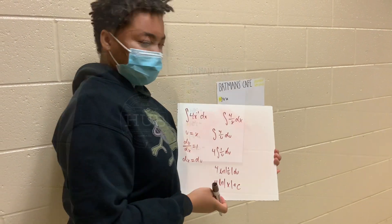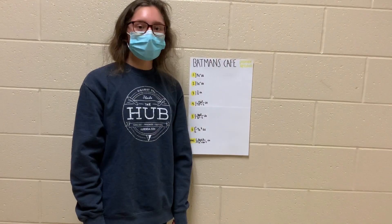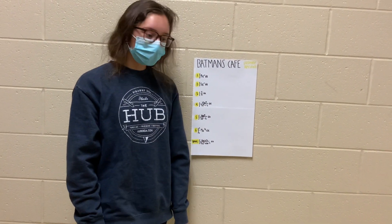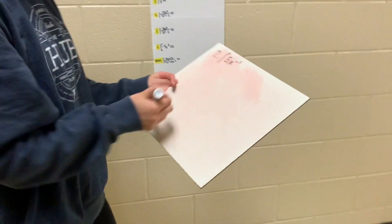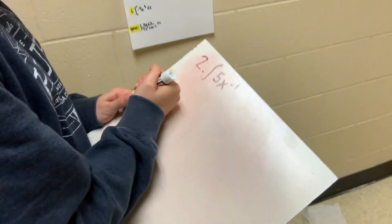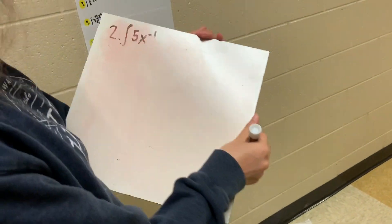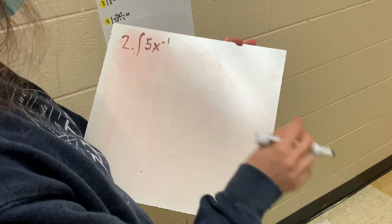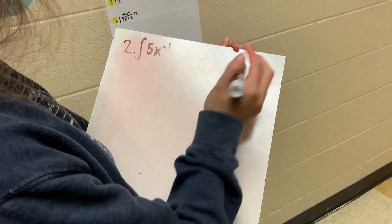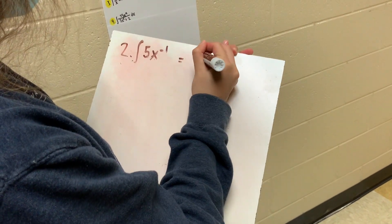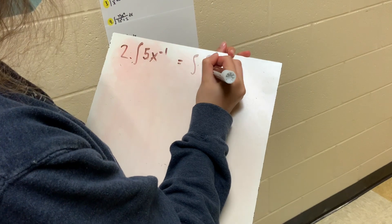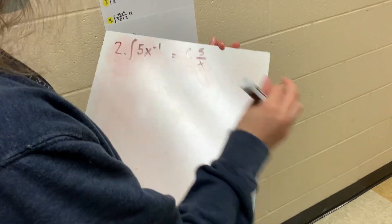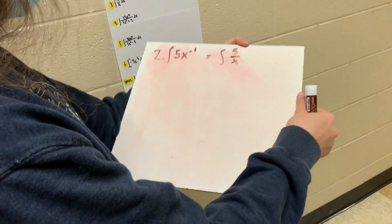Can I get a number two please? Sure, let me show you how to do that. So first we're going to want to reformat it so we get this negative exponent out, so it will be integral of 5 over x. And next we'll want to do the u-sub.